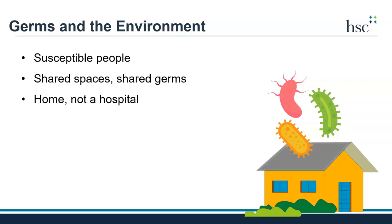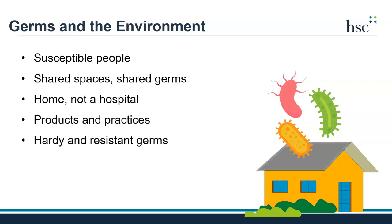This brings us to the very important role of products and practices. The kinds of products used to get rid of germs and how these products are used is also very important. The right chemical products must be used on the right surfaces for the right amount of time to work correctly. If this is not done, then germs can continue to survive and thrive. And lastly, germs themselves have developed ways to be hardy and resistant, so they are not easy to kill and get rid of in a nursing home environment.